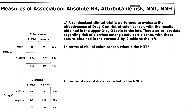So this is kind of two questions in one. A randomized clinical trial is performed to evaluate the effectiveness of drug X on risk of colon cancer, with results obtained in the upper 2x2 table to the left. They also collect data regarding risk of diarrhea among study participants, with those results in the bottom 2x2 table to the left. We're asked first: in terms of risk of colon cancer, what is the number needed to treat?